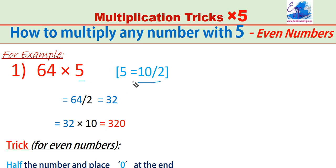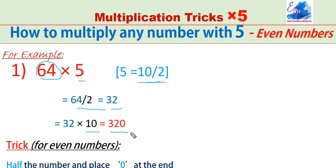We can write 5 as 10 divided by 2. So first we divide the number by 2 to get half of it — that is 32 — then multiply by 10 by putting 0 at the end. The trick for even numbers: halve the given number and put 0 at the end.